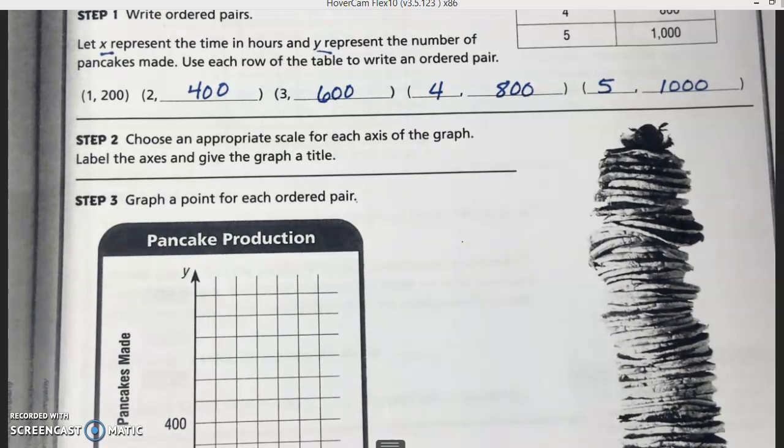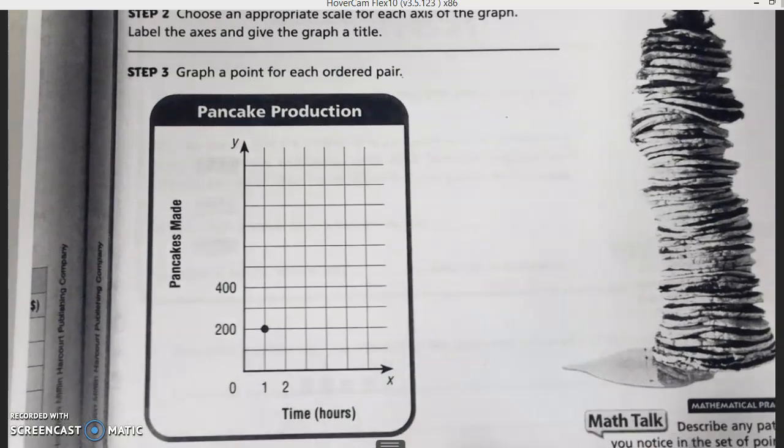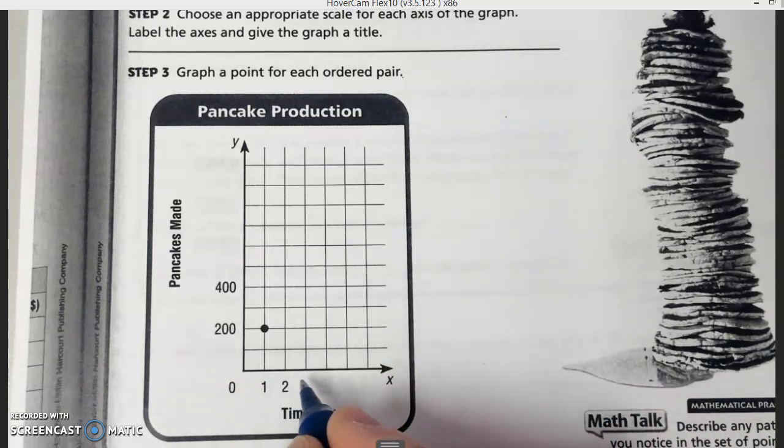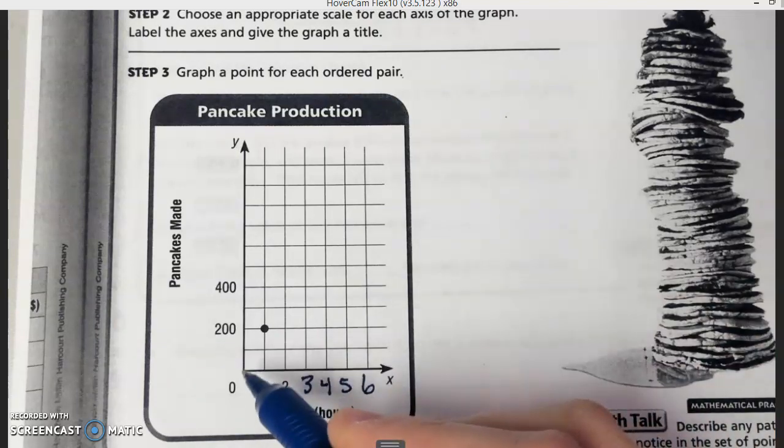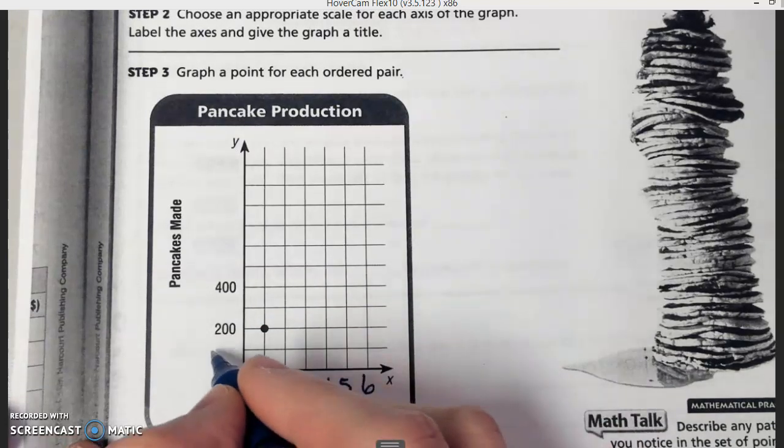Next we've got to choose an appropriate scale for each axis of the graph and label them, which they've already got started for us. For time in hours, notice it has to go here because these are the X values. I've got 0, 1, 2, 3, 4, 5, and 6. And then over here, what are they going up by? If you wanted to go back and fill in the hundreds, you can. I actually probably would.